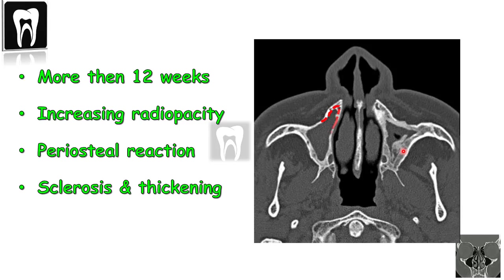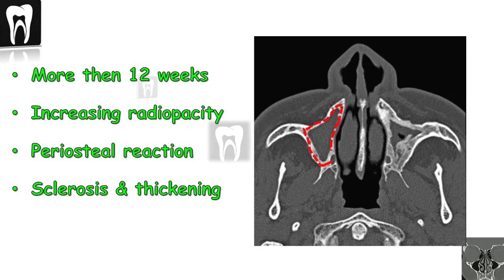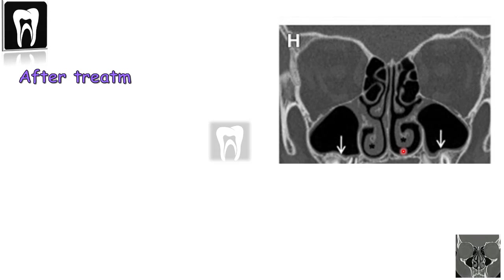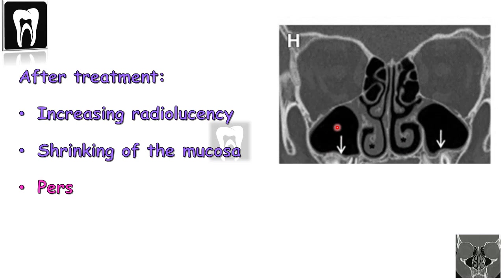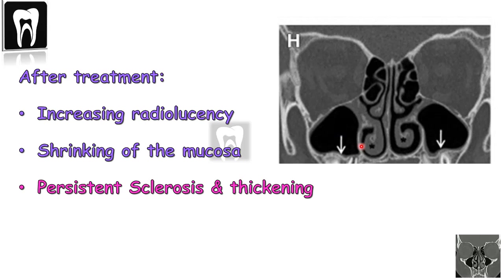After treatment of chronic sinusitis, on imaging we see a gradual increase in the radiolucency of the sinus — the sinus becomes much clearer with a clear area inside. The mucosal thickening starts to shrink and becomes invisible and the sinus returns to its normal appearance. But in chronic sinusitis, the changes in the sinus wall may persist.